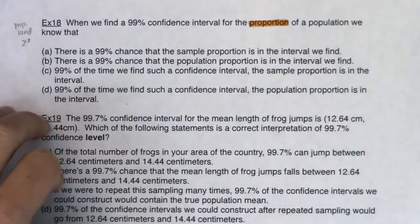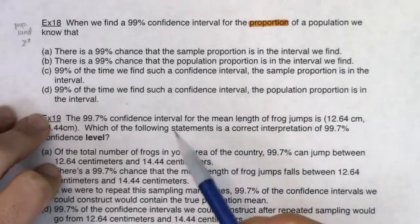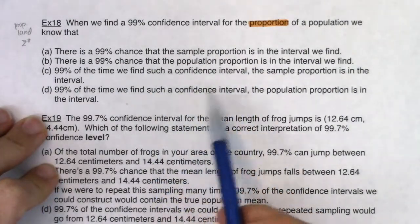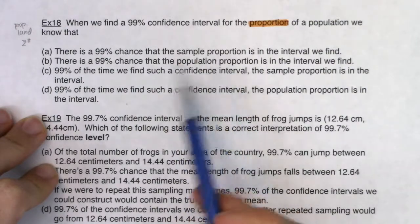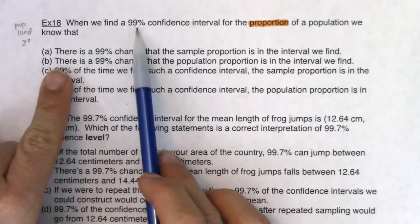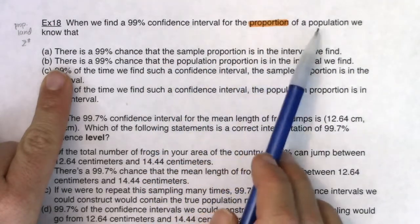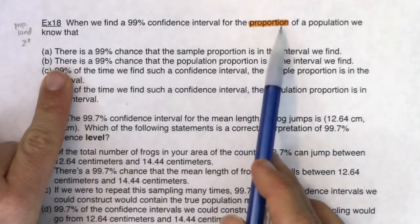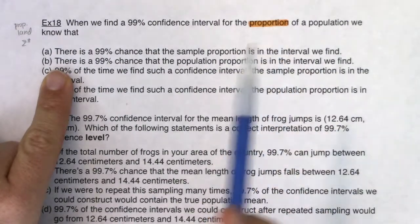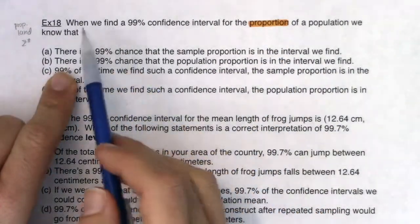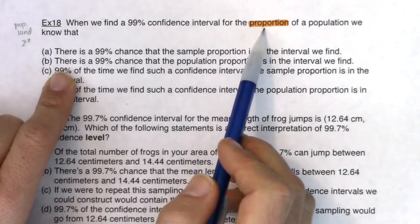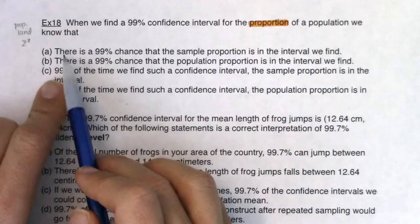I wasn't given any information about whether this is one sample or two samples, and it doesn't totally matter because this is just a theoretical question. Actually, it says 'the proportion of a population' — that's singular, not 'the difference in proportion,' so I am in one sample. But that's a little aside.